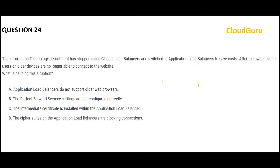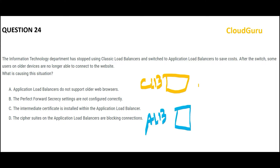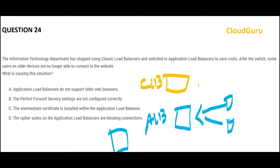Now let us jump into the next question. They had a classic load balancer — classic is very old, nobody uses classic anymore — so they all moved to ALB. This blue box is ALB. When people are trying to connect from their own devices, they are not able to connect to this ALB. They are not able to connect to the website, which is behind the ALB.